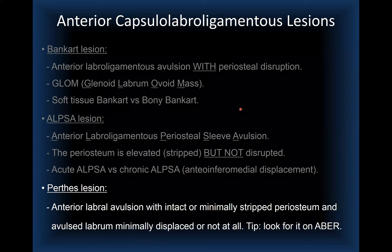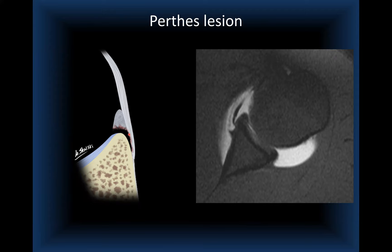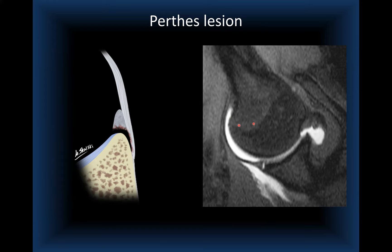The Perthes lesion is a more subtle injury with little or no periosteal stripping and minimal displacement. You may pick it up on axial images as a hint, but it is difficult to call confidently. When ABER is added, tension on the anterior band of the inferior glenohumeral ligament lifts the anteroinferior labrum and allows contrast penetration, making detection easier.